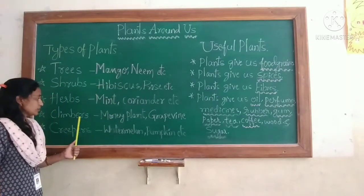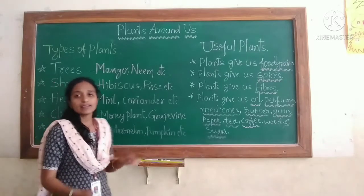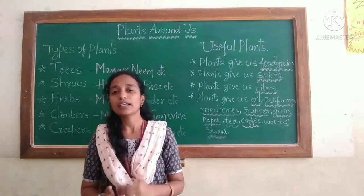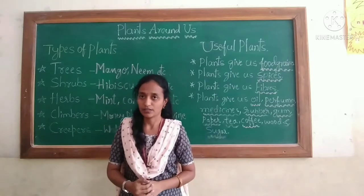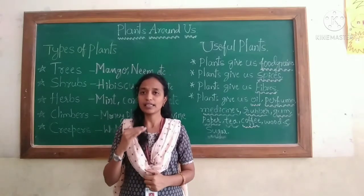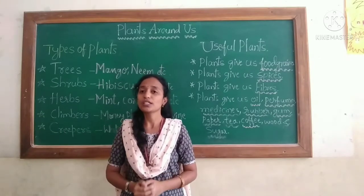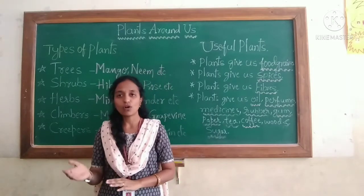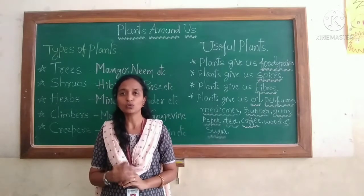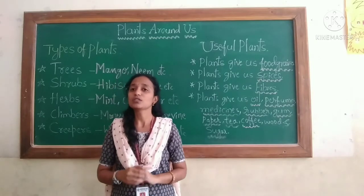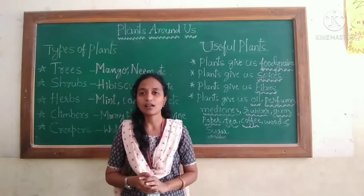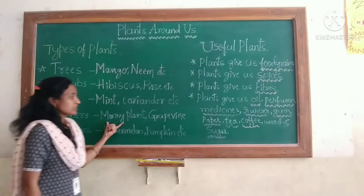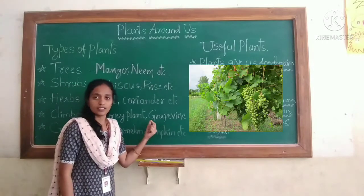Next, climbers. Some plants have weak stems, so they cannot grow straight — they can't stand erect. Erect means straight. So they need the support of another plant, wall, or stick to grow straight. Those plants are called climbers. Examples: money plant, grapevine.